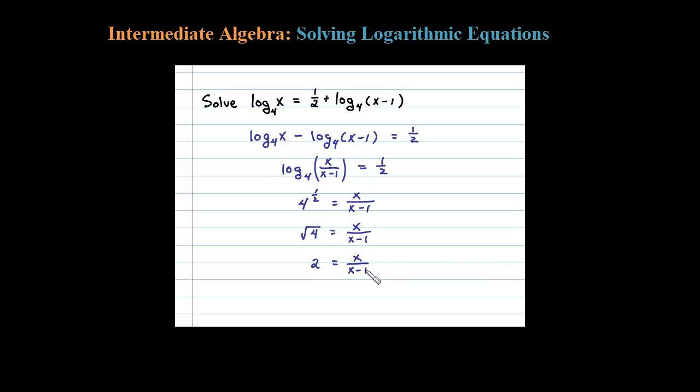Now if I cross multiply, or think of this as multiplying both sides by x minus 1, I get the equivalent equation here: 2 times x minus 1 equals—these cancel—x. Let's be careful here.